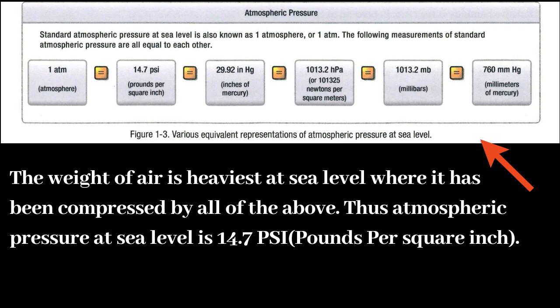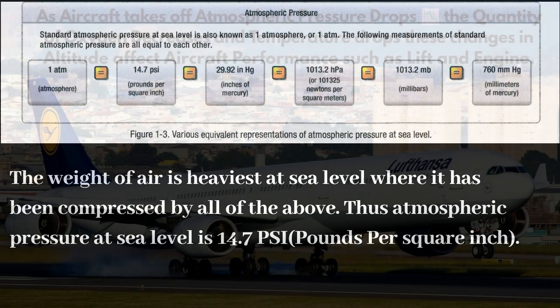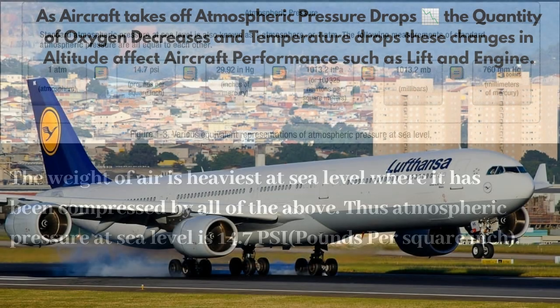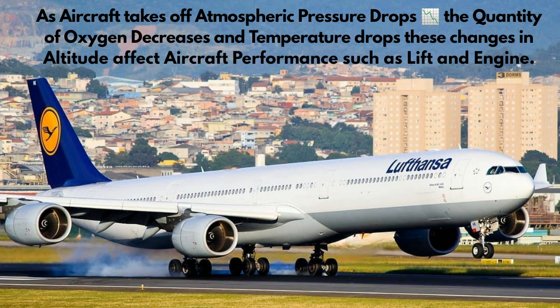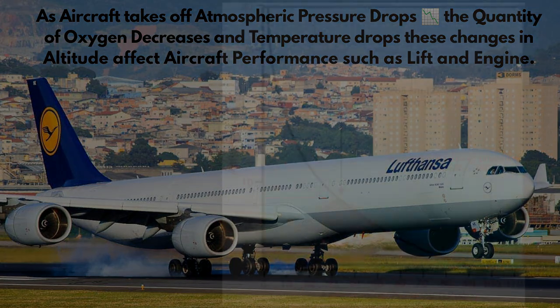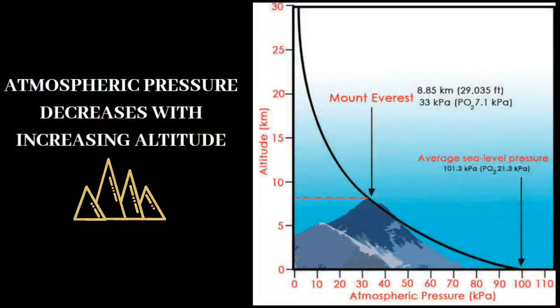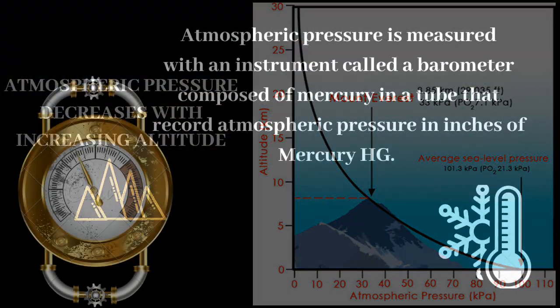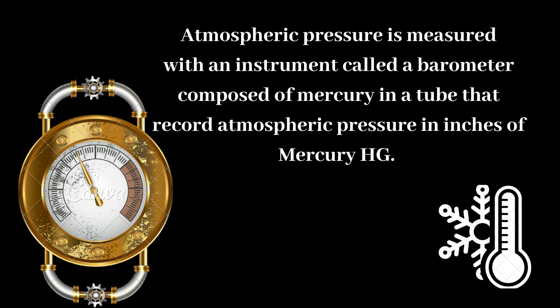Thus, atmospheric pressure at sea level is 14.7 psi (pounds per square inch). As an aircraft climbs, atmospheric pressure drops, the quantity of oxygen decreases, and temperature drops. These changes in altitude affect aircraft performance, such as lift and engine output. Atmospheric pressure decreases with increasing altitude. Atmospheric pressure is measured with an instrument called a barometer, composed of mercury in a tube, that records atmospheric pressure in inches of mercury (Hg).